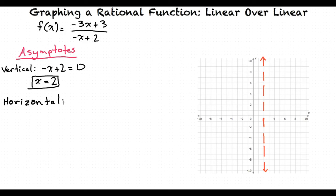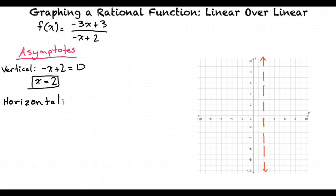The rule for horizontal asymptotes is this. We take the degree of the numerator and call it n, and we take the degree of the denominator and call it m. If n is less than m, then y equals 0. If n equals m, then y equals the leading coefficient of the numerator divided by the leading coefficient of the denominator. And if n is greater than m, then there is no horizontal asymptote.